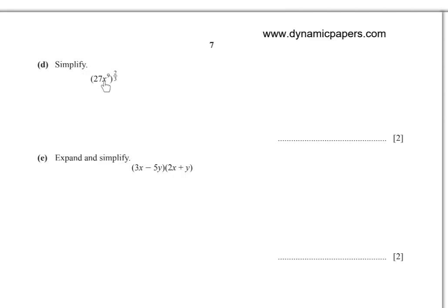Part (d)(ii): Simplify (27x to the power 9) all to the power 2/3. Distribute the power: 27 to the power 2/3 equals 9. For x to the power 9 to the power 2/3, multiply the exponents: 9 times 2/3 equals 6. Answer: 9x to the power 6.